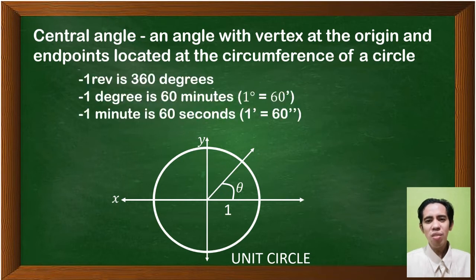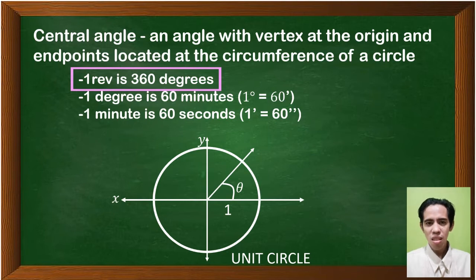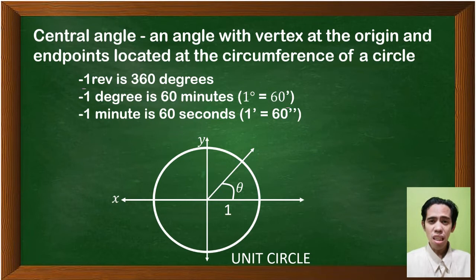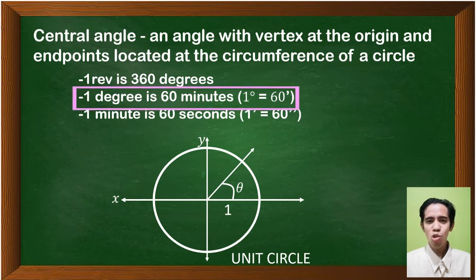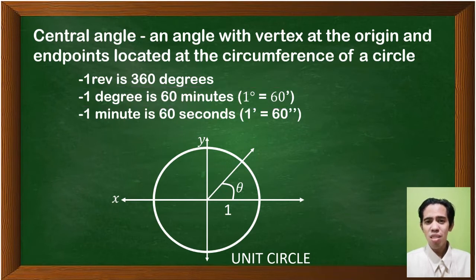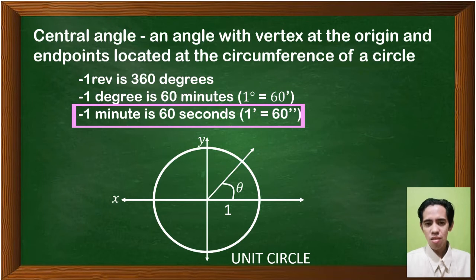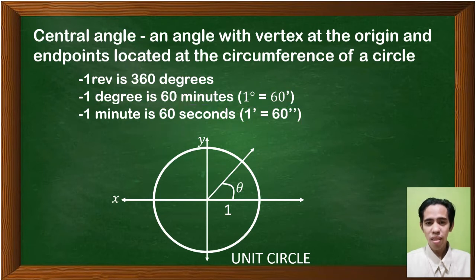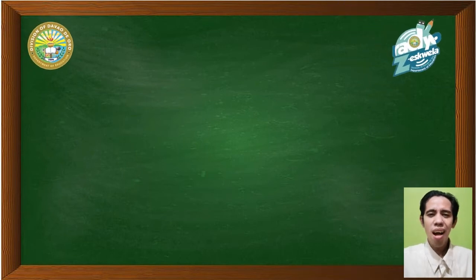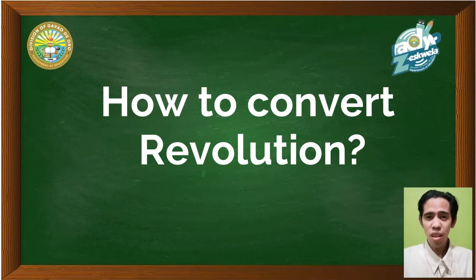Remember, one revolution is equal to 360 degrees. One degree is 60 minutes, which can be abbreviated by a single quotation mark. Then one minute is equal to 60 seconds, which can be abbreviated by a double quotation mark. Now the question is: how are we going to convert revolutions to degrees, minutes, and seconds?